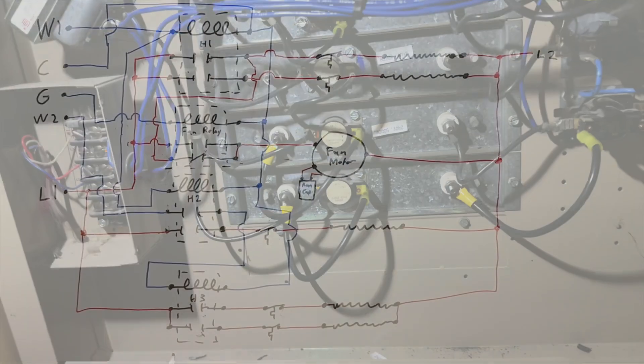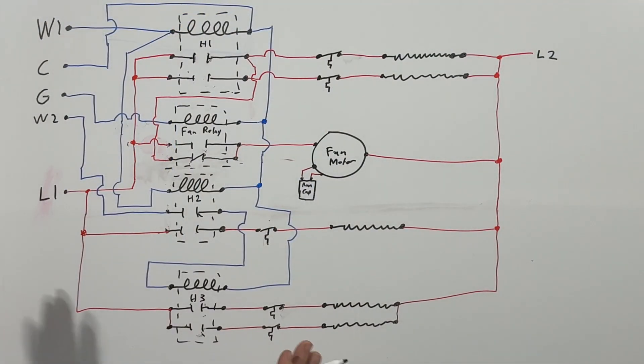So I went ahead and drew out this schematic here just to help you understand how electric heaters work. Most of them are pretty much set up like this. There might be some slight variances. This is a pictorial, so the blue wires or the blue lines are going to be low voltage, red lines are high voltage, black stuff is components.